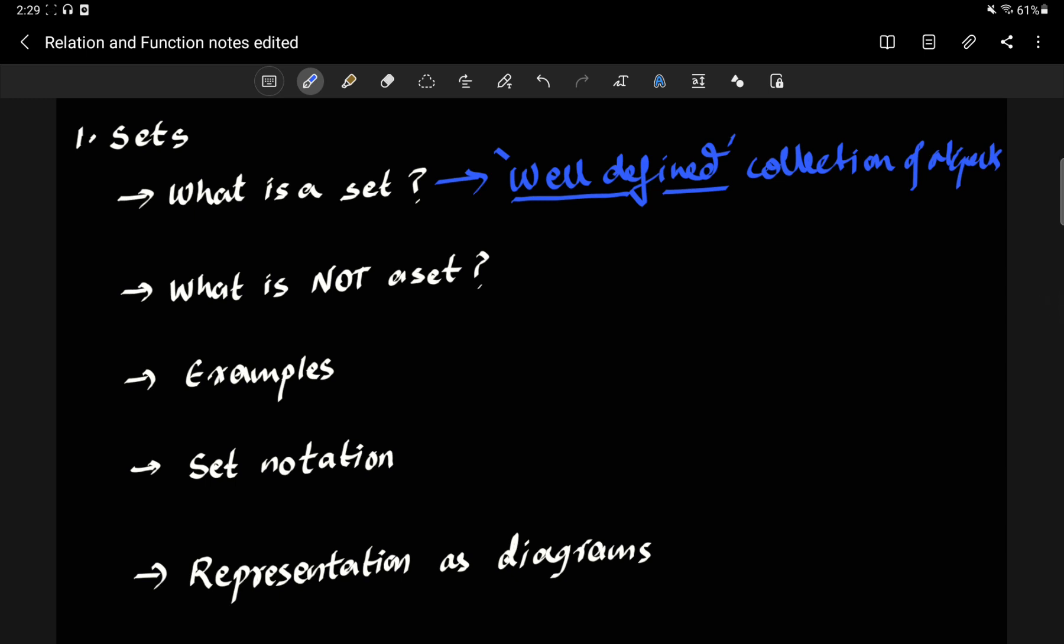What well-defined means is that given an object, you can say if it is in the set or not. Meaning that there's always a definite answer to the question, is this thing in this set? Now, you may say obvious that the answer is always yes or no, but there are examples where you can form contradiction where you cannot answer whether something is in the set or not.